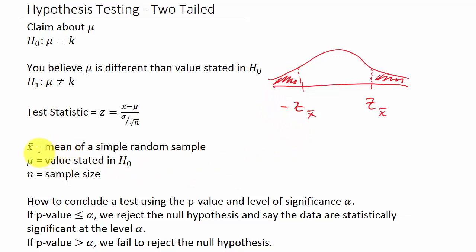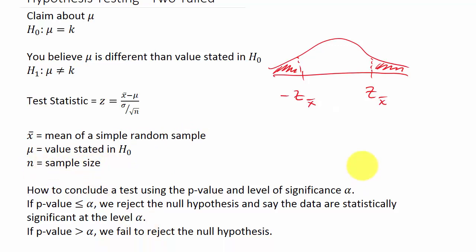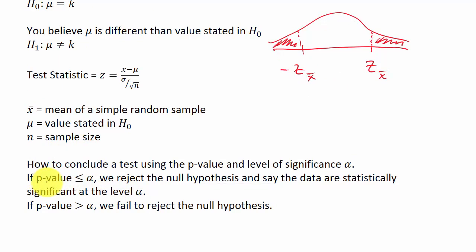X-bar is the mean of a simple random sample, mu is the value stated in the null hypothesis H naught, and n is the sample size. If our P-value is less than or equal to alpha, we reject the null hypothesis and say the data are statistically significant at level alpha. If the P-value is greater than alpha, we fail to reject the null hypothesis.